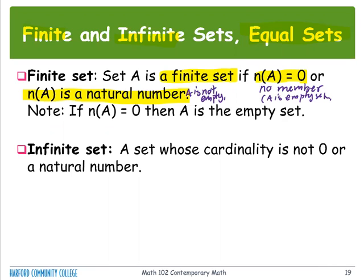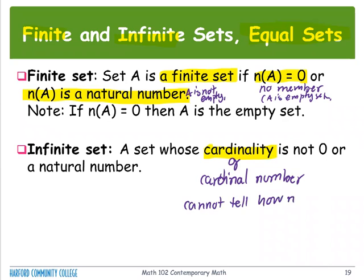The other way around, for the infinite set, its cardinality or the cardinal number is not zero or a natural number. That means you cannot tell how many members belong to that set. If you cannot pick up any number to represent the total members, we call that set an infinite set.